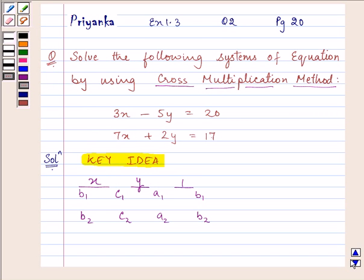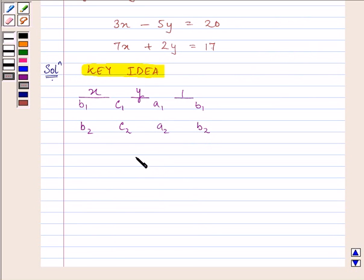Now let us rewrite the equations given to us by shifting all terms to LHS and introducing 0 in RHS. So now 20 and 17 were positive in RHS, so now they are negative in LHS.